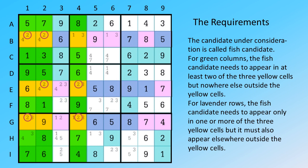For lavender rows, the fish candidate needs to appear only in one or more of the three yellow cells, but it must also appear elsewhere outside the yellow cells.